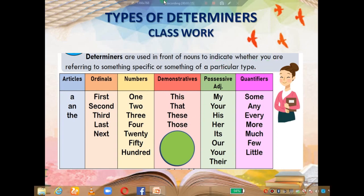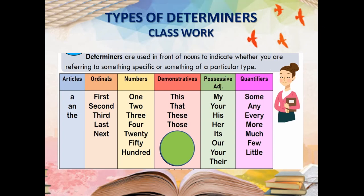The types of determiners include: articles, ordinals, numbers — we can call them cardinals — demonstrative (this, that, these, those), possessive (my, your, his, her, its, our, your, their), and quantifiers. After a possessive determiner, you always have to put a noun: my book, your book, his laptop, her pencil, its nest, our class.